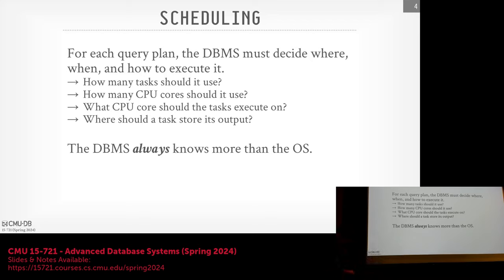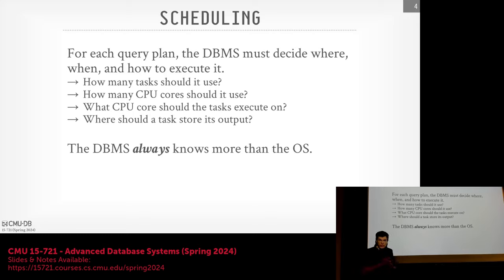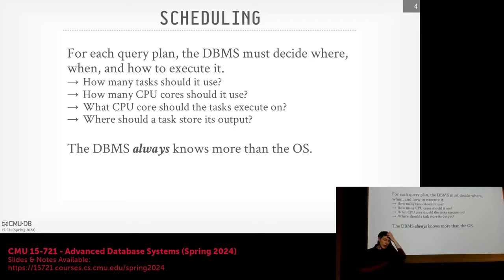The main takeaway is that we always want to do scheduling ourselves, especially on a single node, rather than relying on the OS. Postgres lets the OS do all the scheduling because it just forks full processes. Every other data system is going to want to do all the scheduling itself. In a distributed environment, things like BigQuery or Dremel do a shuffle stage after every pipeline breaker, allowing them to reorganize and recalibrate workers — but we'll cover that later.